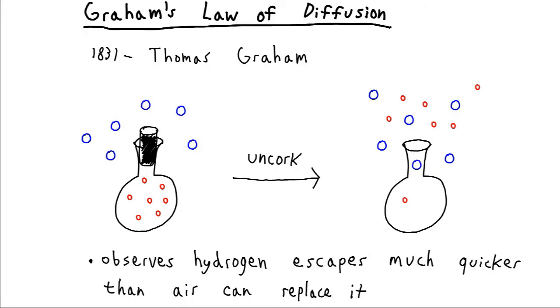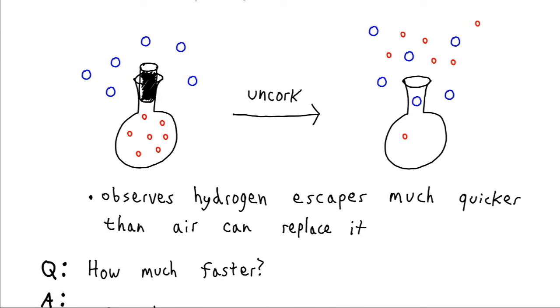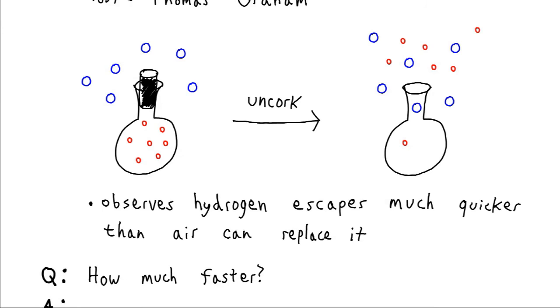An important observation was made about the motion of these gas molecules. In 1831, Sir Thomas Graham is doing an experiment. And he has hydrogen gas in a flask. And he uncorks the flask. And what he notices is that the hydrogen escapes much more rapidly than the outside air can move in to replace it. Why is that? Well, we established that lighter gas molecules move much more quickly than heavier gas molecules. So hydrogen being exceptionally light, it's going to move very rapidly out of the container. And it will take a comparatively long time for the external air to move in.